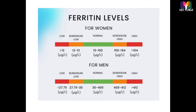For men, the normal ferritin range is 30 to 400 micrograms per liter. Borderline low is 27.75 to 30, and less than 27.75 is very low. Borderline high is 400 to 412 micrograms per liter, and more than 412 is very high. In iron deficiency anemia, ferritin levels will be low, but in thalassemia — especially beta-thalassemia — and in inflammation cases, ferritin levels will be increased.